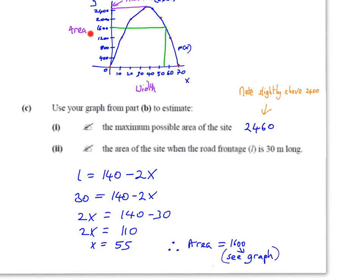It's very important to label the axes because usually the questions that follow are based on an interpretation of what the graph means. Part (c)(i) says use your graph to estimate the maximum possible area of the site. Where is the area at its most? Right at the top of the curve. If you go across to the y-axis, the area is slightly over 2400. Between these two points there's a small hill, so you want to get right to the top of it, which makes it slightly above 2400. The maximum possible area is roughly 2460.